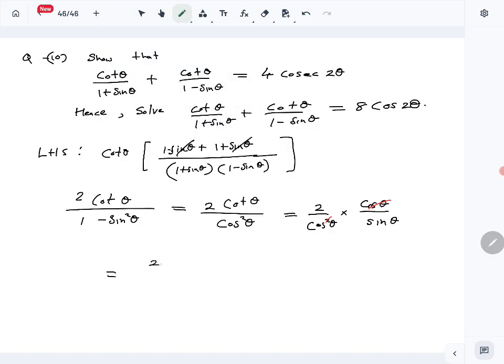We now have 2 over cos theta sin theta. We want 4 cosec 2 theta or 4 over sin 2 theta. So multiply the numerator and denominator by 2. Now we have the required result: 4 over sin 2 theta, or 4 times cosec 2 theta.